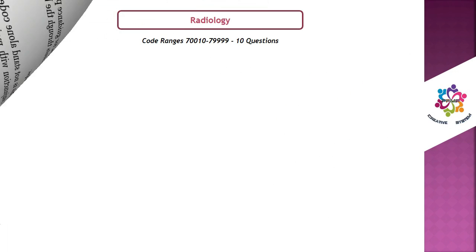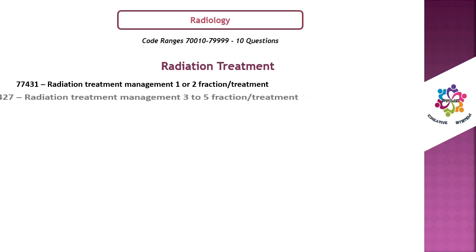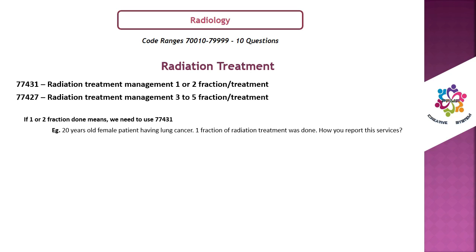Number 2: Radiation treatment management. 77431 = radiation treatment management, 1 or 2 fractions. 77427 = radiation treatment management, 3 to 5 fractions. If 1 or 2 fractions are done, use 77431 only. Scenario: 1 fraction of radiation treatment for lung cancer — answer is 77431.